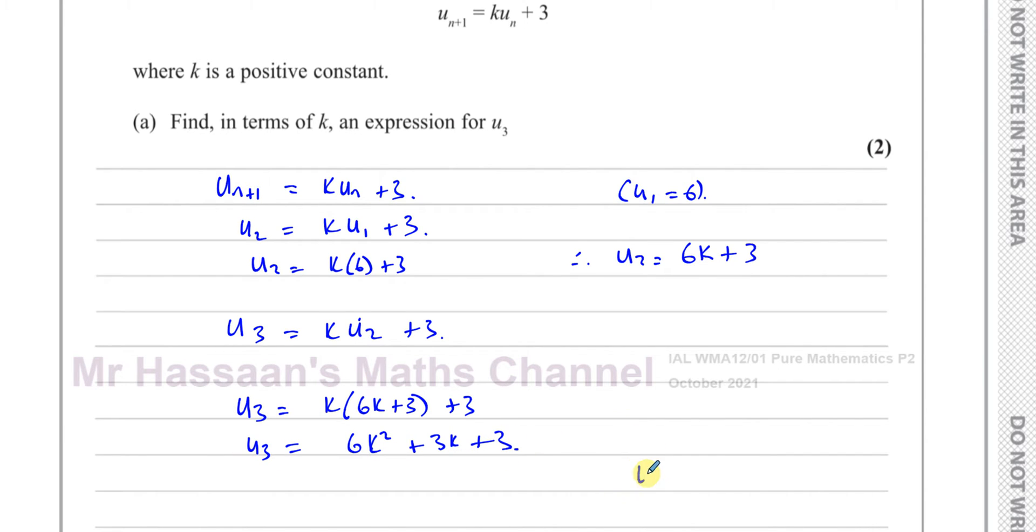So this is the answer to this part of the question: U3 equals 6K squared plus 3K plus 3. That's part A done, and now we've got to do part B.